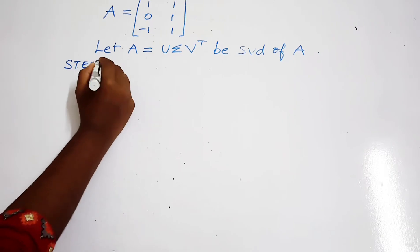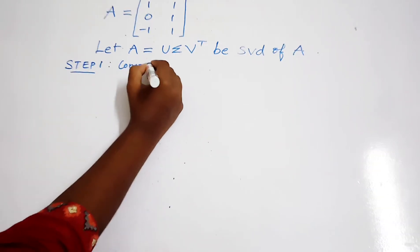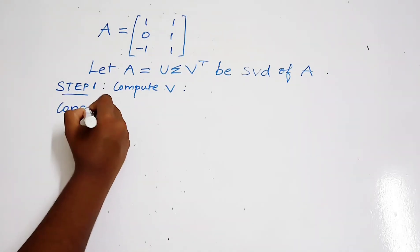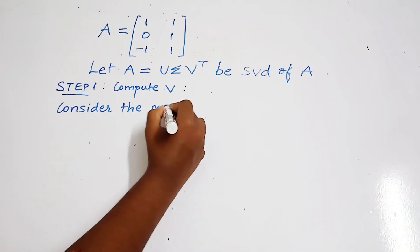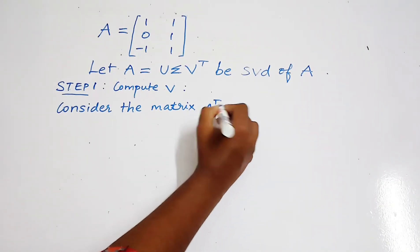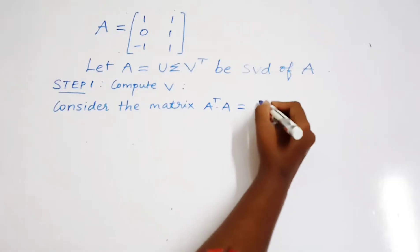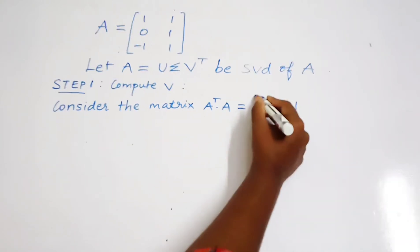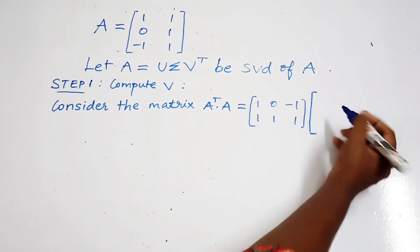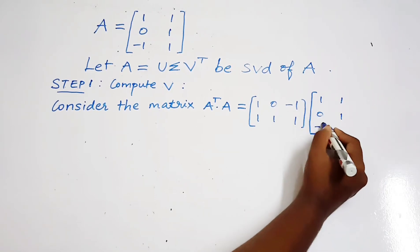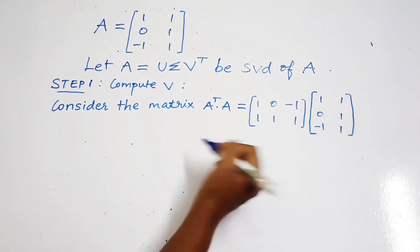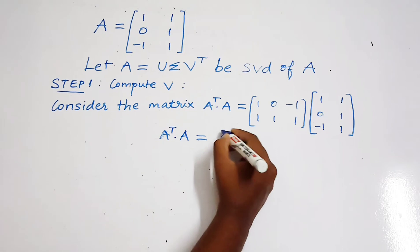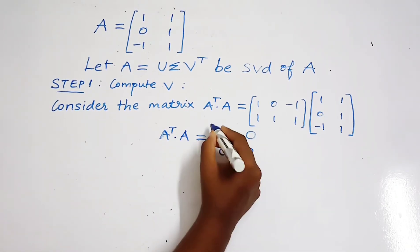The first step is computation of the matrix V. Consider the matrix A transpose A. We have to find the value of A transpose A. So A transpose A is the matrix with entries 2, 0, 0, 3.